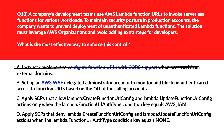Option B says: set up an AWS WAF delegated administrator account to monitor and block unauthenticated access to function URLs based on the OU of the calling accounts. AWS WAF cannot enforce deployment restrictions for function URLs or validate Lambda's authentication settings during configuration. Let's eliminate it. Option C says: apply SCPs that allow Lambda CreateFunctionUrlConfig and Lambda UpdateFunctionUrlConfig actions only when the Lambda function URL auth type condition key equals AWS_IAM. Allowing certain actions doesn't prevent unauthenticated configuration unless denial conditions are also enforced. Wrong answer.